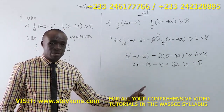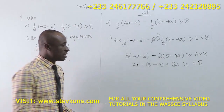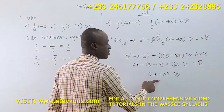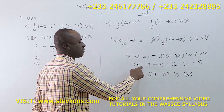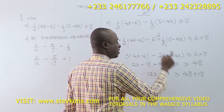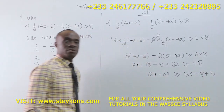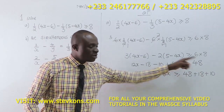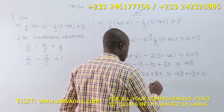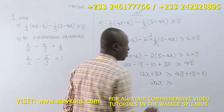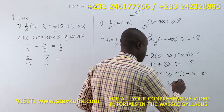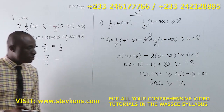Now from here, what do we do? We group like terms. So we have 12x plus 8x on the left. Now negative 18 crosses over becoming positive 18, and negative 10 crosses over becoming positive 10. So 12x plus 8x gives us 20x, and x is greater than or equal to 48 plus 18 plus 10, which gives us 76.